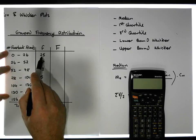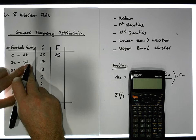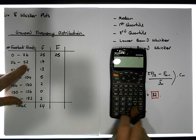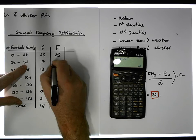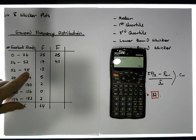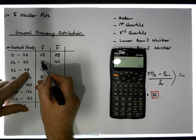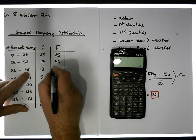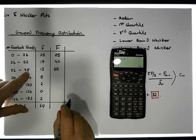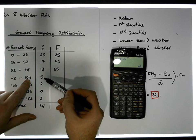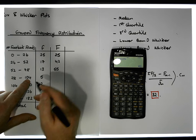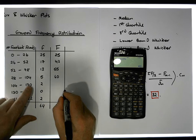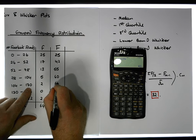The cumulative frequency column answers: how many values are less than each upper bound? There are 25 values less than 26. Less than 52: 25 plus 17 equals 42. Less than 78: 13 plus 42 equals 55. Less than 104: 5 plus 55 equals 60. Less than 130: 62. Less than 156: continuing the cumulative total.